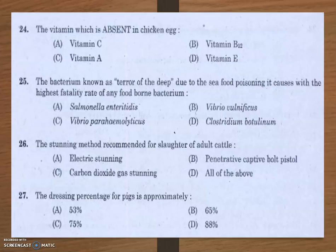Electric stunning can be used for the slaughter of pigs, sheep, goats, poultry, and ostriches, but in adult cattle it can sometimes result in excessive hemorrhage in the muscles or spinal fractures. So the most preferred method for adult cattle slaughtering is penetrative captive bolt pistol.